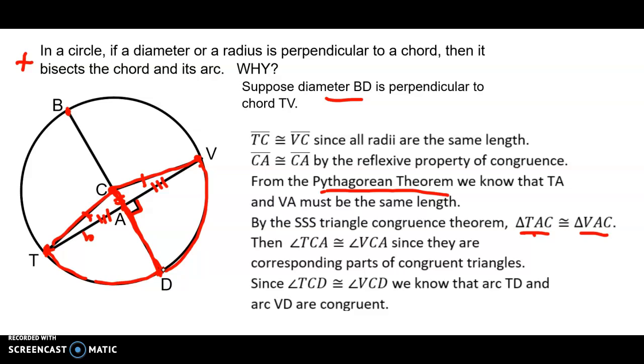Then we have it. If TA is congruent to VA, then the diameter bisects the chord. And we've shown that TD and VD are congruent. So that diameter also bisects the arc.